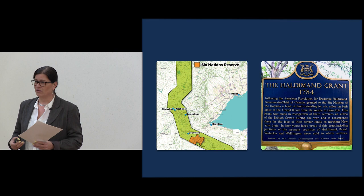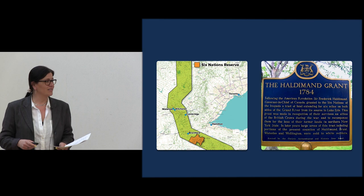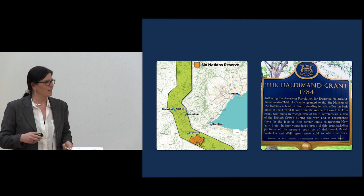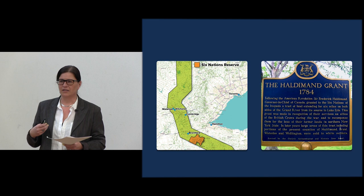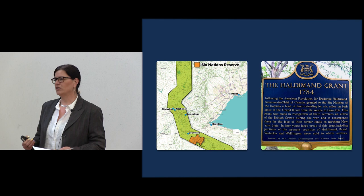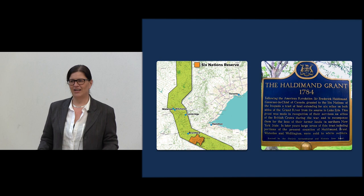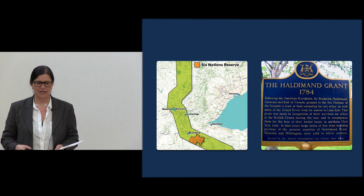Before we start, I do want to acknowledge that we're situated on the traditional and original territories of Neutral, Anishinaabe, and Haudenosaunee peoples. The particular treaty area we're on is the Haldimand Tract, which includes land six miles on either side of the Grand River — a promise to the Six Nations. It's important to always acknowledge the territory and land we're on, to make visible Indigenous peoples historically and presently, who are the original caretakers and who still contemporarily live in these regions. Our history in this nation currently known as Canada has gone to great lengths to erase Indigenous peoples.